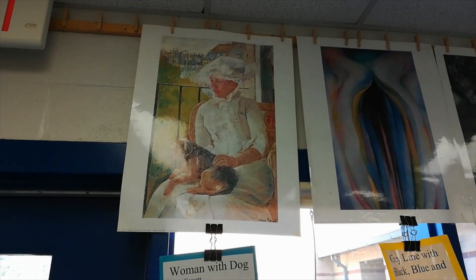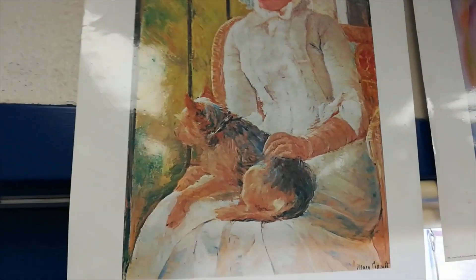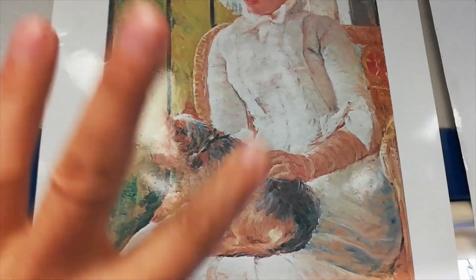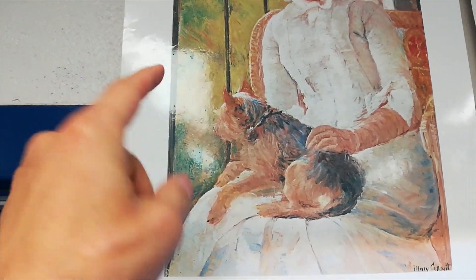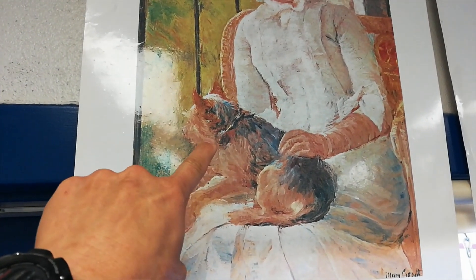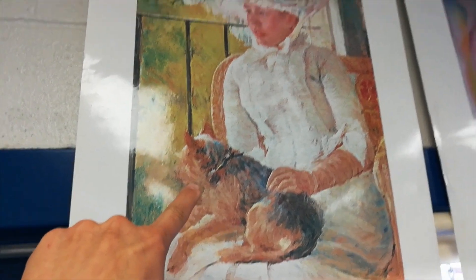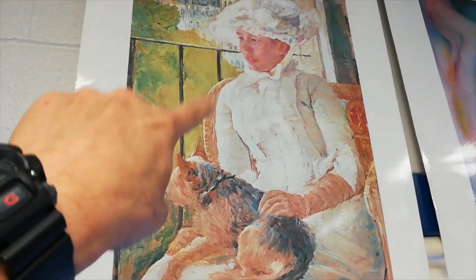Mary Cassatt's Woman with Dog. We talked about tactile hair, texture we can touch. This is a painting of a dog, and the reason why I'm focusing on the dog, not the lady.